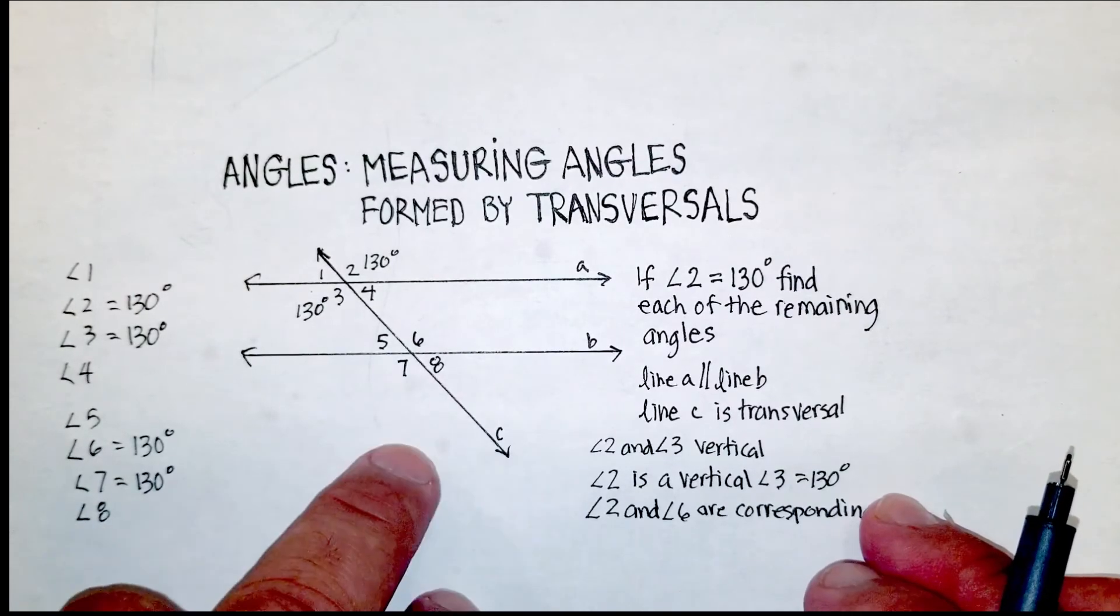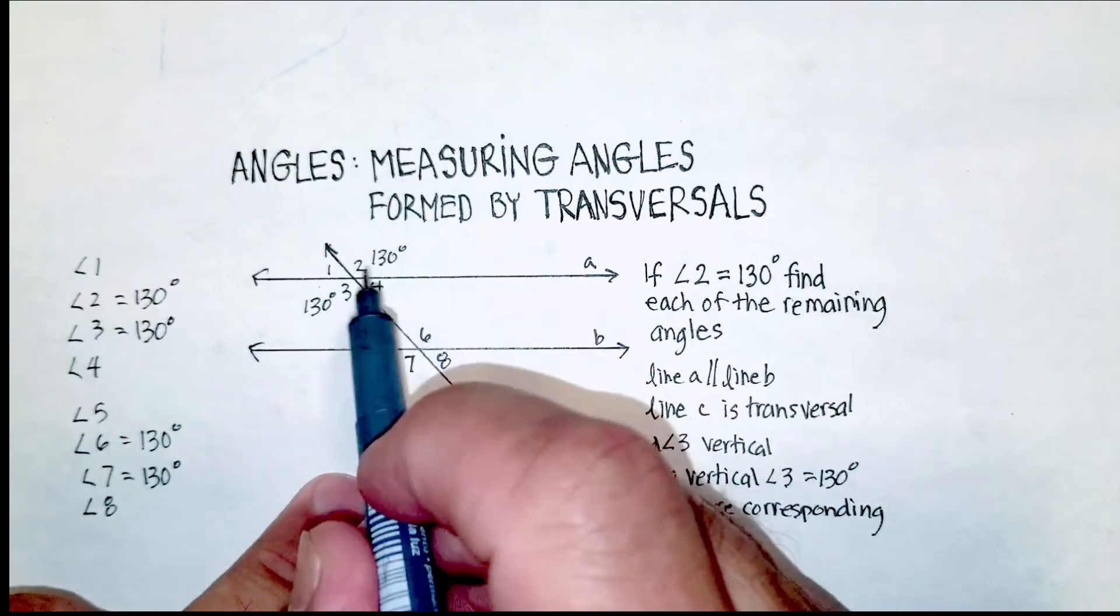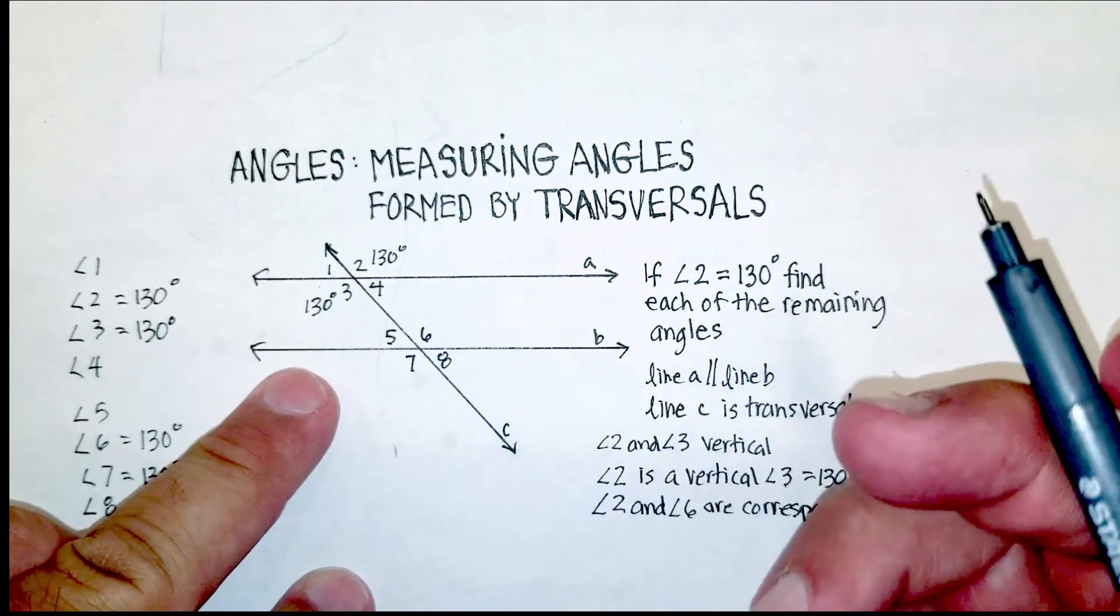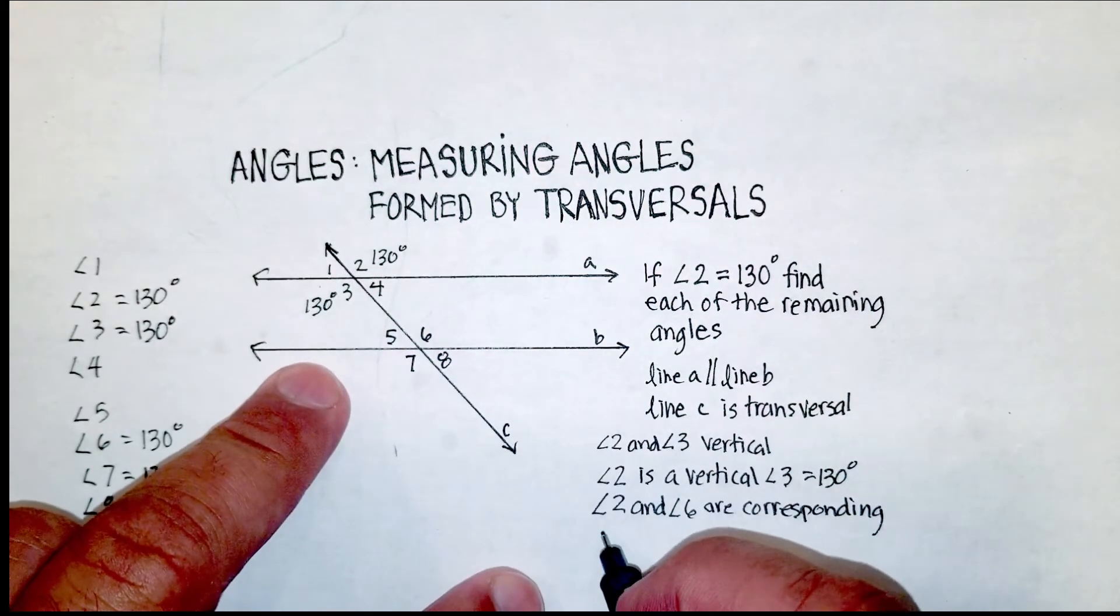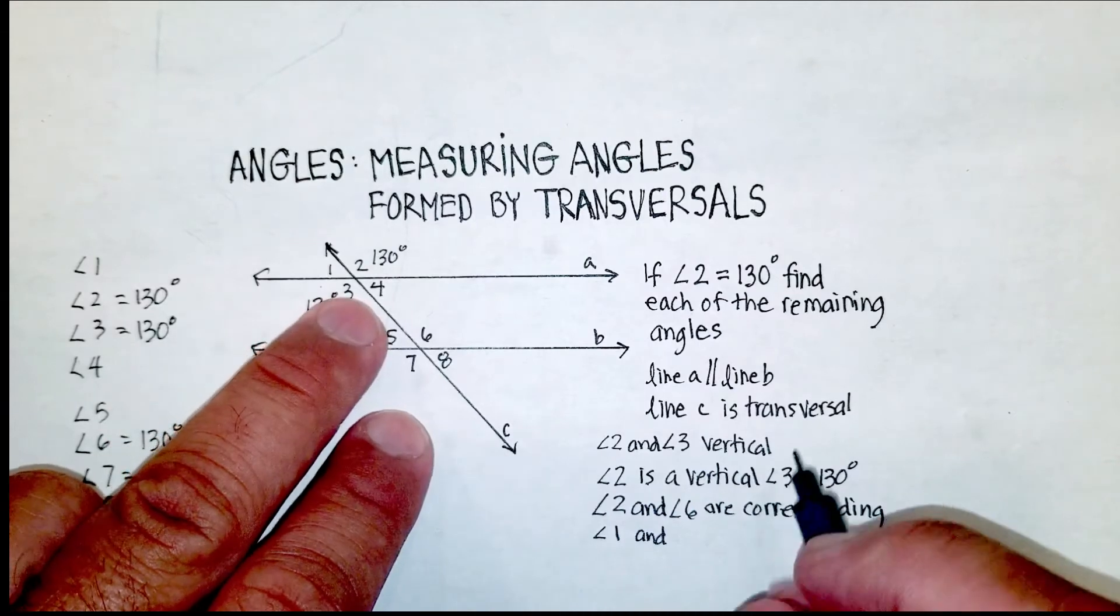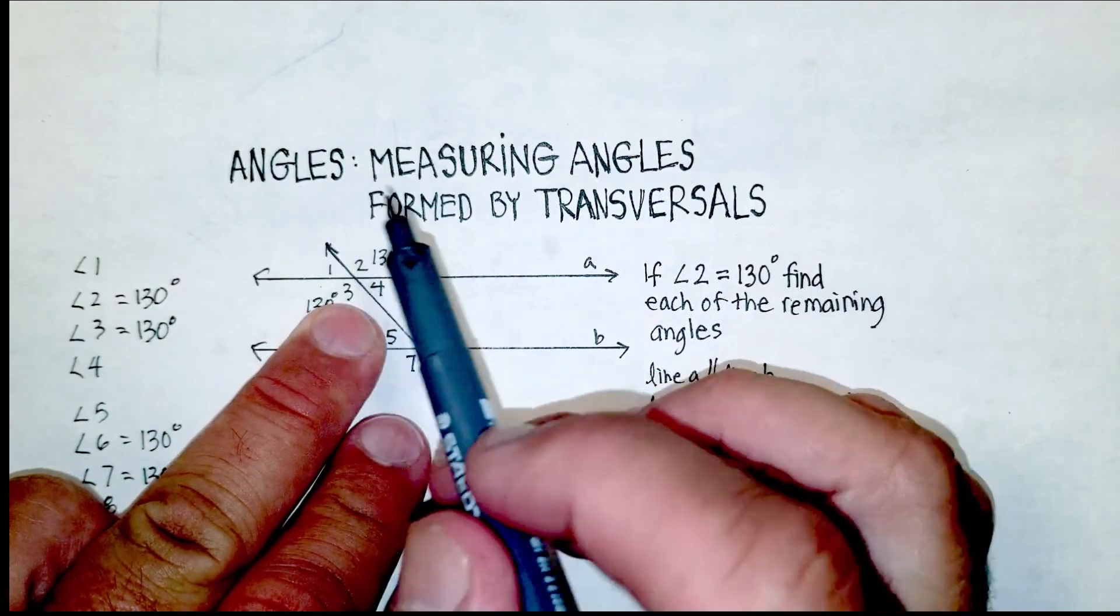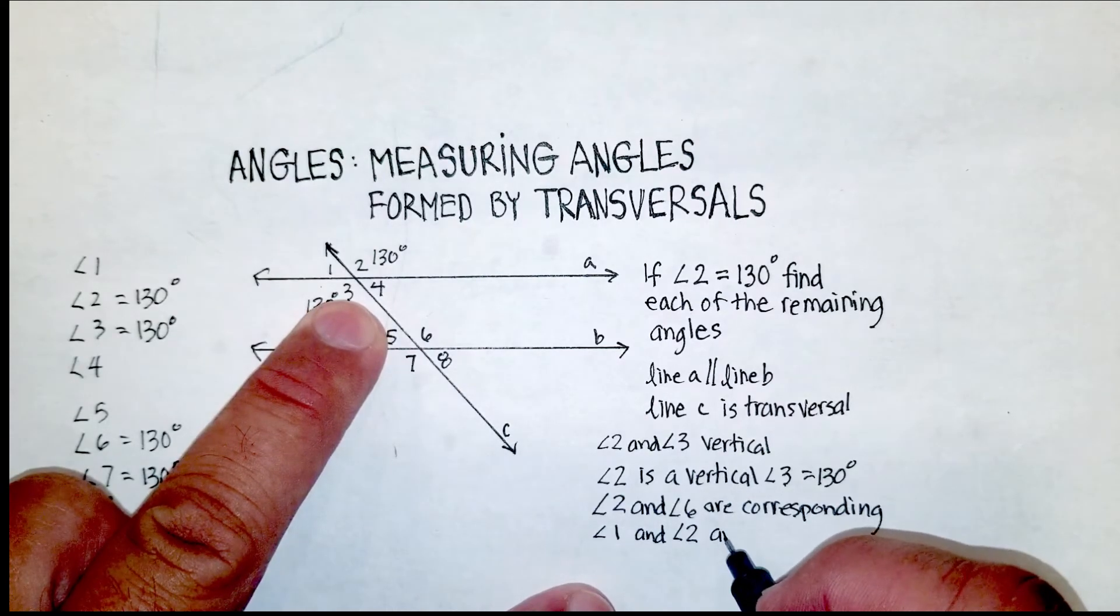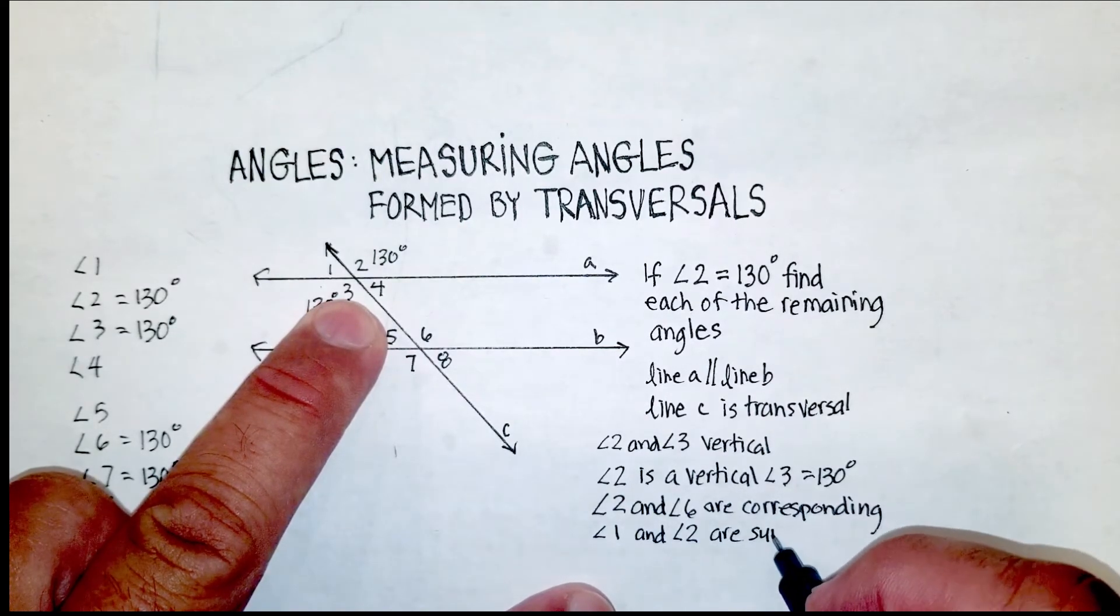So let's keep going. Now, we also know that angle one and angle two are what they call supplementary. Now, what does that mean? Supplementary angles are adjacent angles that add up to 180 degrees.